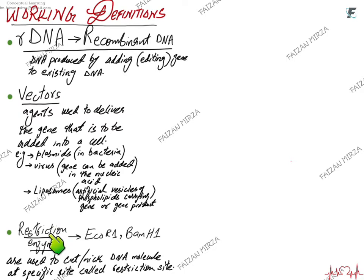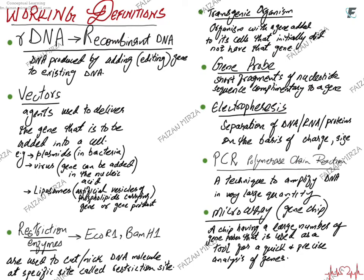Then there are restriction enzymes. Restriction enzymes are like scissors — just as a tailor cannot work without scissors, a genetic engineer cannot work without restriction enzymes. For example, EcoR1 or BamH1 are used to cut or nick the DNA molecule at a specific site, and the site at which it cuts is called the restriction site.